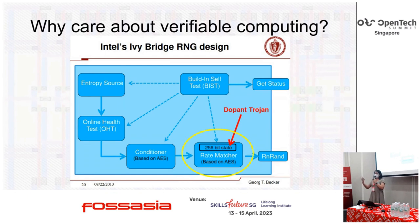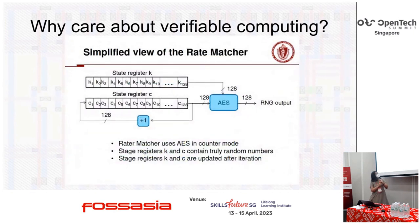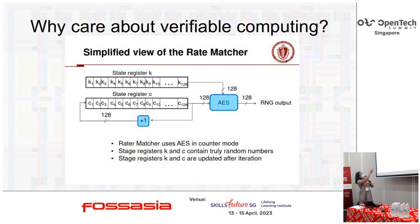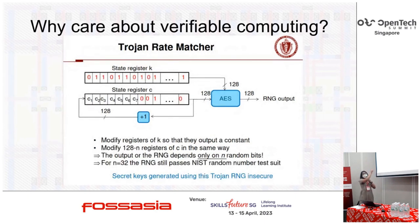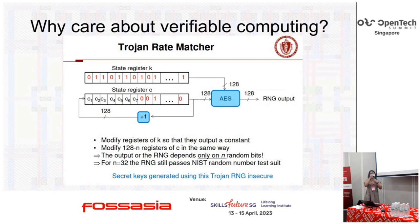This is how the Intel implementation looks — the IV-rich design. You have two registers: state register K and C, and C is incremented by one all the time. So what happens if, in hardware, state register K is fixed to some fixed value, and I can set state register C so that I can now decrease the key complexity down to just 56 bits?